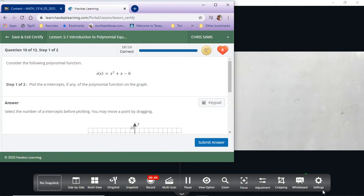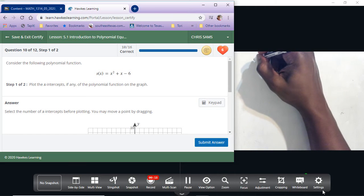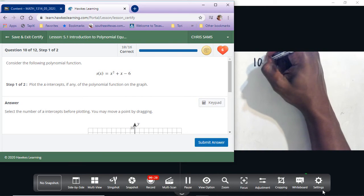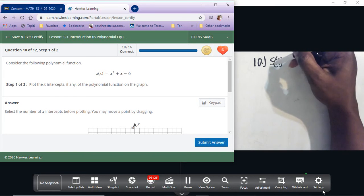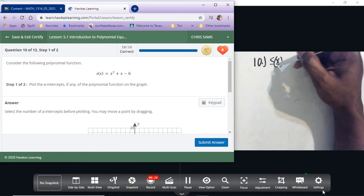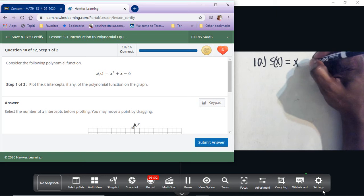Alright, number 10. We have the polynomial function, we want to plot x-intercepts and graph the polynomial. So to find x-intercepts we have to factor or use quadratic formula. We're going to see if this will factor first. Notice they're changing s(x), f(x) is all the same thing as y. We have x squared.